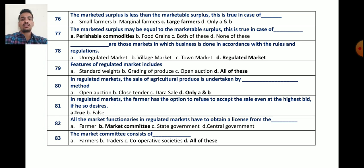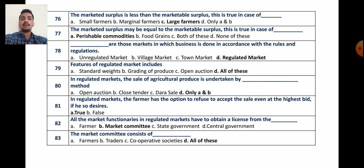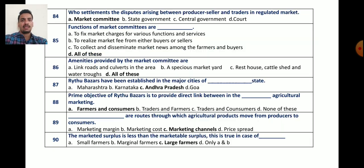Next question, question number 83: the market committee consists of only farmers, only traders, or only cooperative societies? No — the correct answer is all of these. The market committee consists of farmers, traders, and cooperative societies.